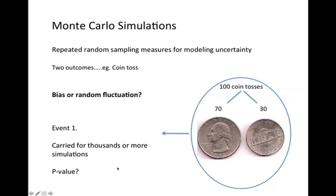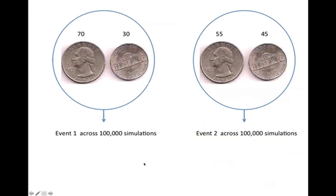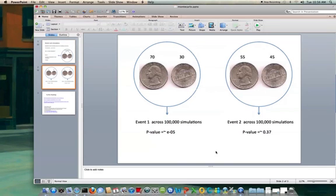To put a better comparison I will draw two events analogously. The first one I have already mentioned. The second one has 55 heads and 45 tails. When they are subjected to the same number of simulations we will try to find out the p-value.